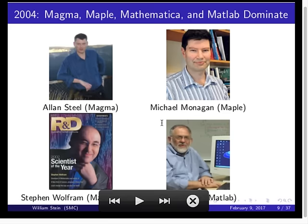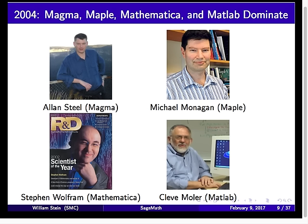So here are the four systems that really, in 2004, were the backdrop when I was thinking about wanting something open source: Magma, Maple, Mathematica, and MATLAB. The three on the lower right are the founders or co-founders of each of those programs.